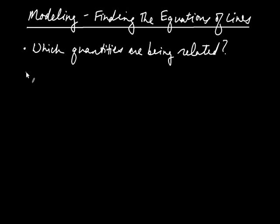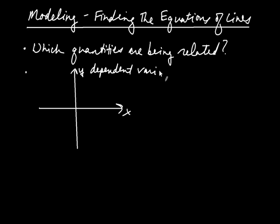And the second one is, which depends upon which? So to illustrate that, let me put in a little coordinate system here. If this is x and this is y, whatever is on the vertical axis is called the dependent variable, and whatever is on the horizontal axis is called the independent variable. Whatever is on the vertical axis depends upon whatever is on the horizontal axis. So these are our two questions: which quantities are being related and what depends upon what?